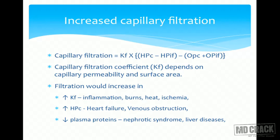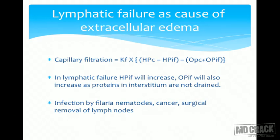Decreased plasma protein can occur in a number of clinical situations and causes edema. In nephrotic syndrome, plasma proteins that normally should not be filtered at the glomerular capillaries are filtered and excreted into the urine, decreasing plasma protein concentration. This decreases oncotic pressure at the capillaries, reducing the force opposing filtration, so more fluid is filtered, causing edema. In liver diseases, plasma proteins are synthesized less, also causing decreased oncotic pressure and edema.